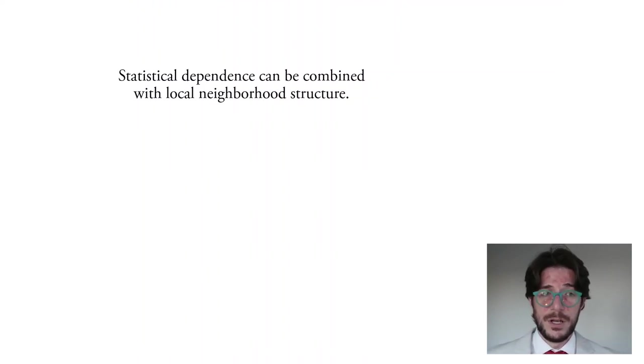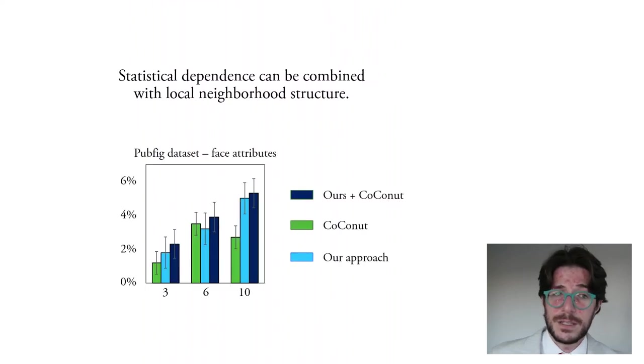But one final benefit of our method is that the statistical dependence approach can be combined with the local neighborhood structure idea from Kamis and Lampert's coconut. Here, in dark blue, we minimize a shared objective that achieves greater performance gains than either method individually.